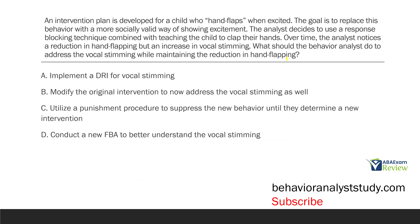An intervention plan is developed for a child who hand flaps when excited. The goal is to replace this behavior with a more socially valid way of showing excitement. The analyst decides to use a response blocking technique combined with teaching the child to clap their hands. Over time, the analyst notices a reduction in hand flapping, but an increase in vocal stimming. What should the behavior analyst do to address the vocal stimming while maintaining the reduction in hand flapping? This is an interesting question with a lot of information. It's asking about what the analyst needs to do to address the vocal stimming and maintain the reduction in hand flapping, because we have two different things going on here.